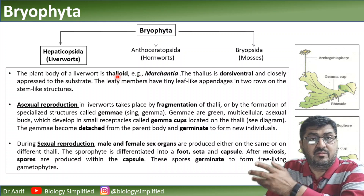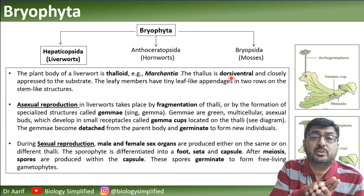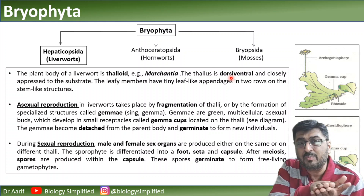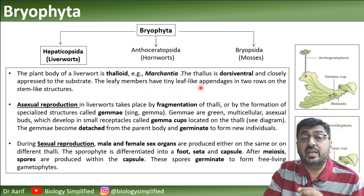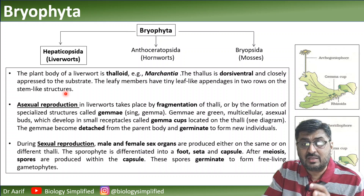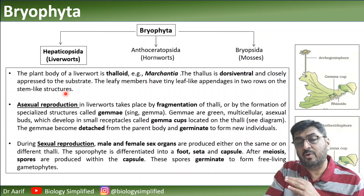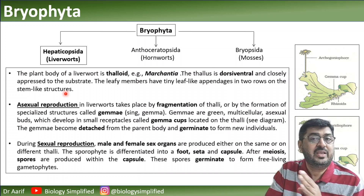The plant body of liverworts is thaloid - it is always the gametophyte. The thallus is dorsiventral, meaning it is flat. Marchantia is closely appressed to the substratum. The leafy members have tiny leaf-like appendages called phyloids in two rows on stem-like structures. So we have root-like, leaf-like, and stem-like structures - all three - but not true roots, true stems, or true leaves.